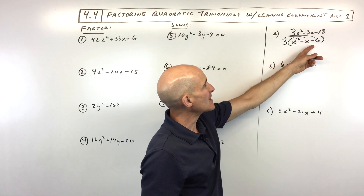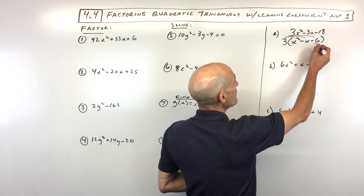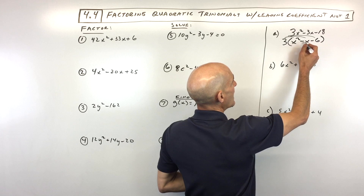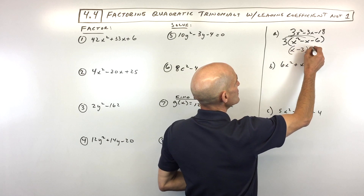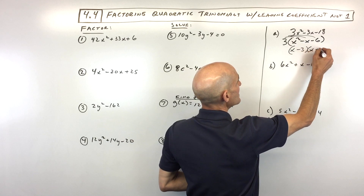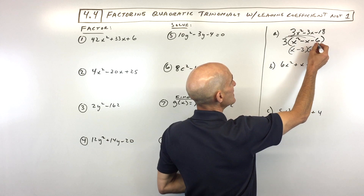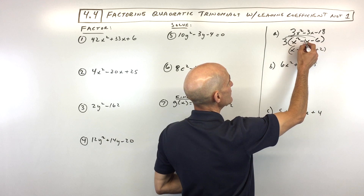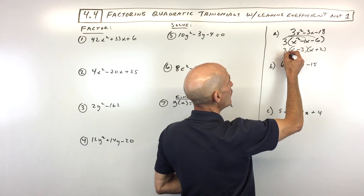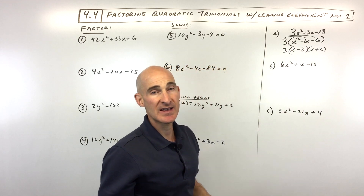Now we want to see if we can factor it further. We ask: what two numbers multiply to negative six but add to negative one? That's going to be x minus three times x plus two, because negative three times two is negative six, but negative three plus two is negative one. So this negative x is like negative one. We just bring down the three, and that's it.